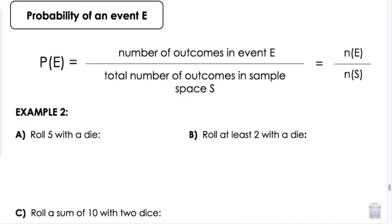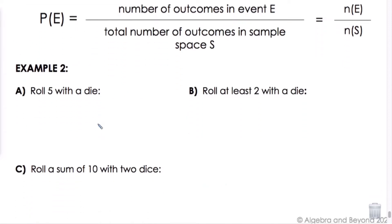Example two, letter A: roll five with a die. So the probability of five, the number of outcomes in the event. I know that there's only one side of the die that is five, so it would be one divided by the sample space, which we know is six. There are six sides. So we wrote it as a fraction, and then we can write it as a decimal and even as a percent.